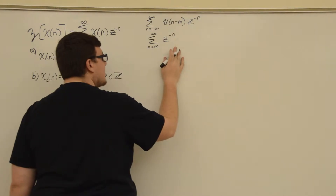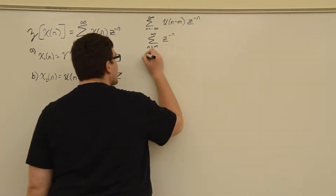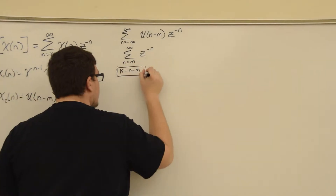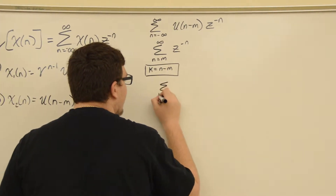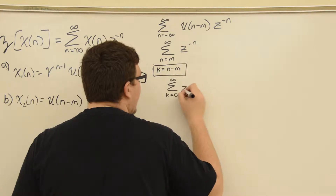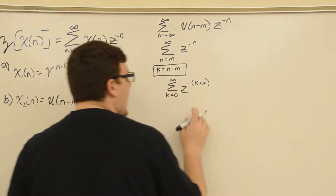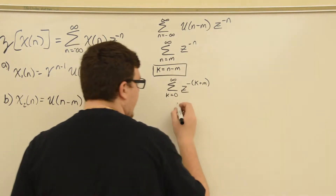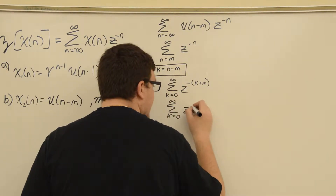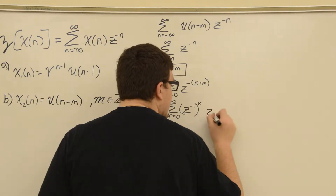This looks like a geometric series, but we need the index to start at 0. So we change the index using K equals N minus M. That gives us the sum from K equals 0 to infinity of Z to the negative K plus M. We can split this into the sum from K equals 0 to infinity of Z to the minus 1 to the K, times Z to the minus M.